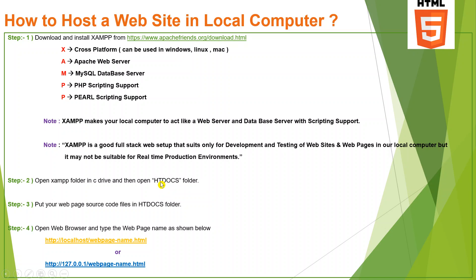htdocs is the root directory of the Apache web server — this is very important. Whatever web pages you put inside this folder will be served. Put your HTML source code files in the htdocs folder. Then open your web browser and type the web page name. To access your web page, type in the browser: localhost/your-webpage-name.html.